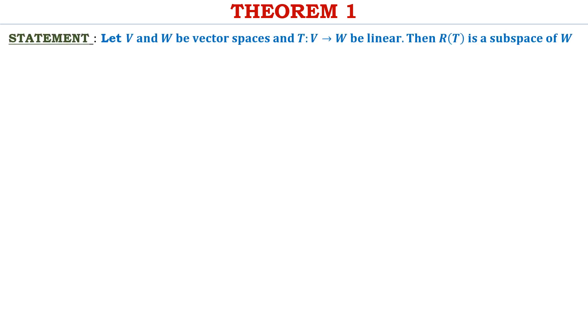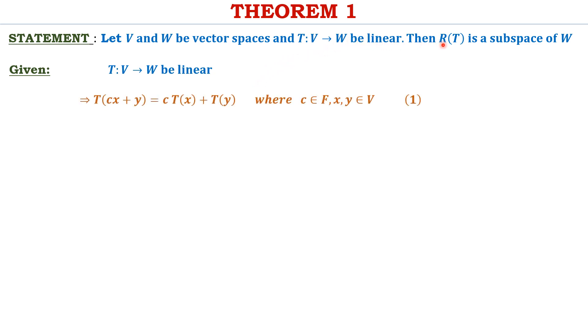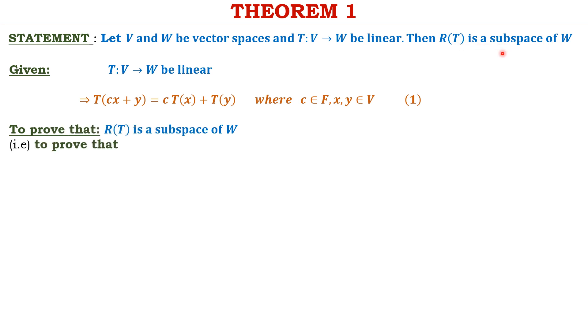Let's now do a theorem based on the range of a linear transformation. The statement reads: let V and W be vector spaces and T from V to W be a linear transformation. Then the range of the linear transformation R(T) is a subspace of W.